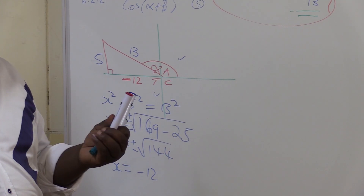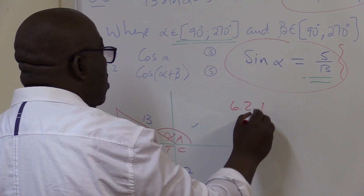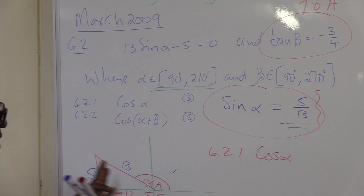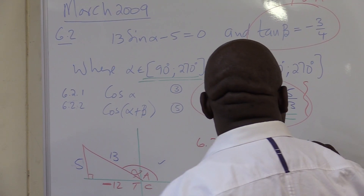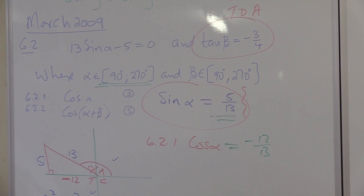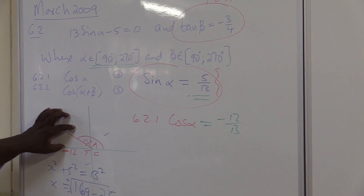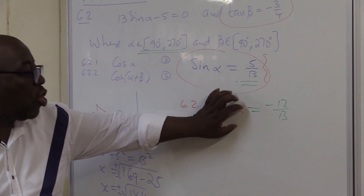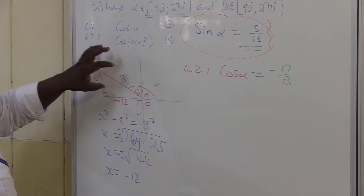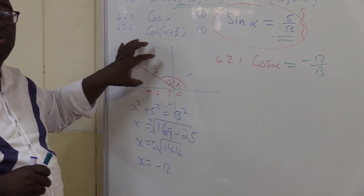Once you've got all three dimensions, you can solve any problem. We are looking for cosine of alpha — question 6.2.1. Cos is adjacent over hypotenuse. The adjacent is minus 12, over hypotenuse 13. So cos alpha equals minus 12 over 13. We've got sine in the second quadrant. What is positive in this quadrant? Only sine. So when we ask about cos in this quadrant, it must definitely be negative, because cosine is negative in the second quadrant. If I'm talking about tan in this quadrant, it will also be negative. But sine is positive in the second quadrant.